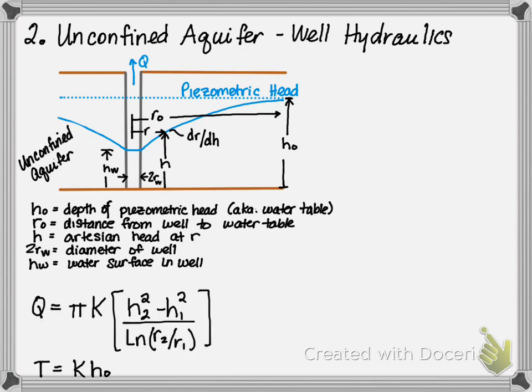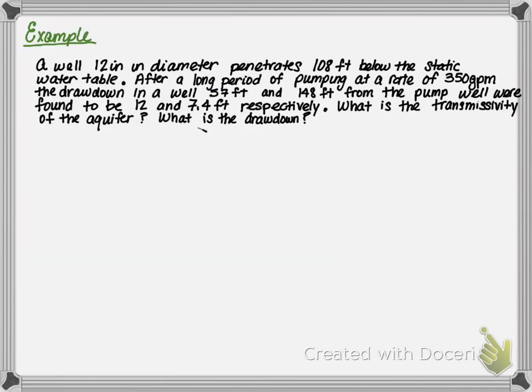Based on this, we're able to determine the flow rate within an unconfined aquifer as πK times the quantity H2 squared minus H1 squared, divided by the natural log of R2 over R1. And the transmissivity is K times H0. Let's solve an example to further illustrate this point.